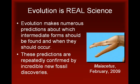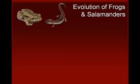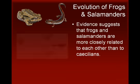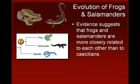For the remainder of this video, we will explore some examples of fossil intermediate forms that were predicted to exist before they were actually discovered. The first example involves the evolution of frogs and salamanders from ancient amphibians. Modern molecular studies have suggested that, among the three existing groups of amphibians, frogs and salamanders are more closely related to each other than to the worm-like caecilians.